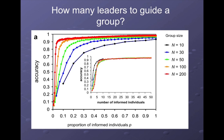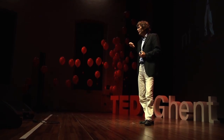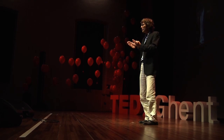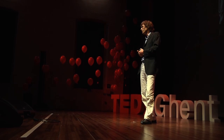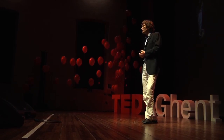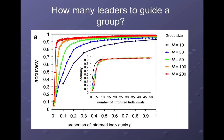We simulated groups of 10 to about 200 individuals and investigated how many leaders it takes to guide a group. It takes only about 5 to 10 individuals to lead groups of very different sizes with very high accuracy. The consequence of this fairly constant number of leaders is that the required proportion of individuals to guide a group actually goes down as group size goes up.